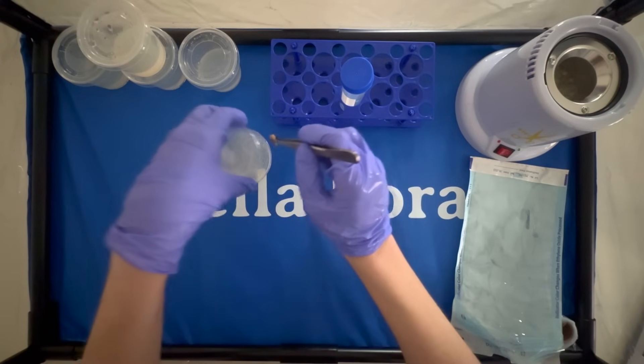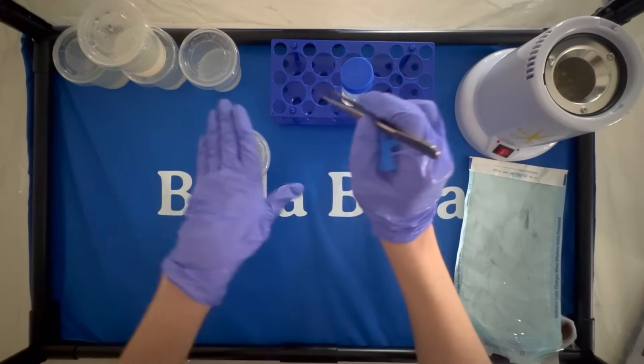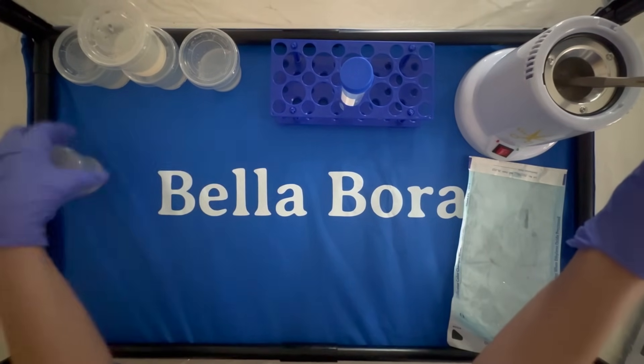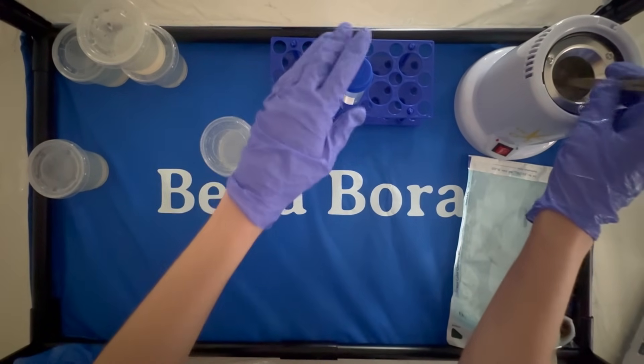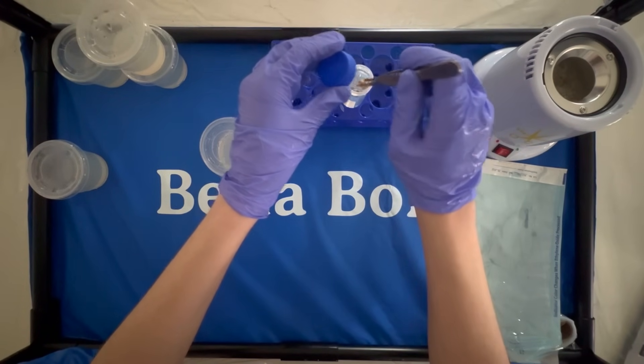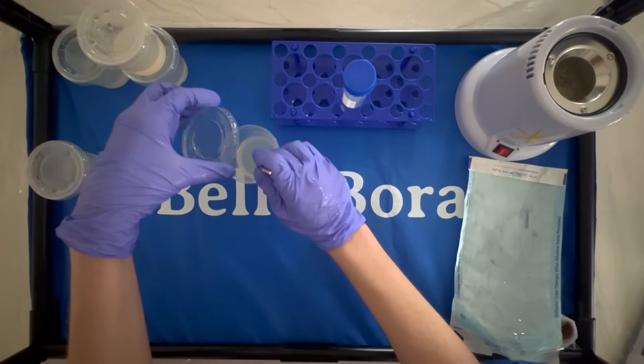When we're working inside of the still air box, you don't just want to leave the lids off of things. You can do that if you're in a laminar flow hood, but the still air box is not as good at preventing contamination. It just sort of prevents the air from moving as much as it would if you were just doing this anywhere. So we want to move quickly and avoid moving our arms unnecessarily inside of the box.